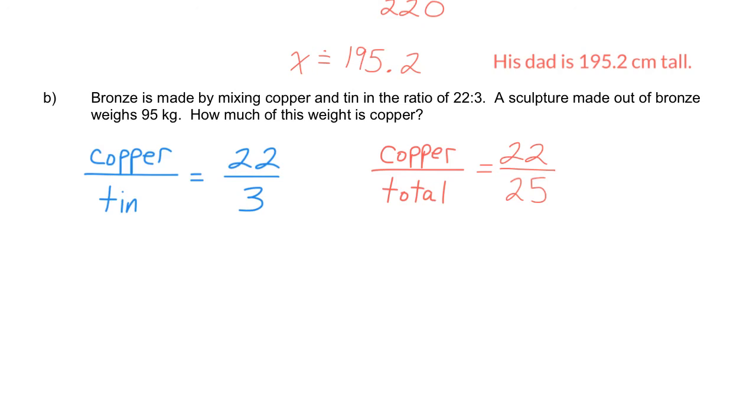Now, the sculpture weighs 95 kilograms. That's the total weight. And we want to know how much weight is copper. So our unknown, x, is the amount of copper. Now that we have our proportion, the hard part's over, all we need to do is solve the proportion, and we'll get our answer.